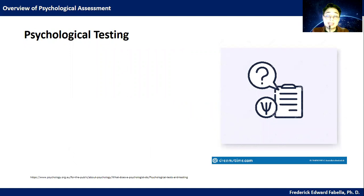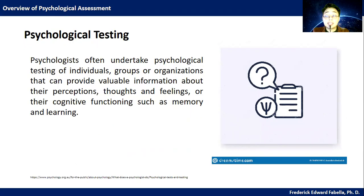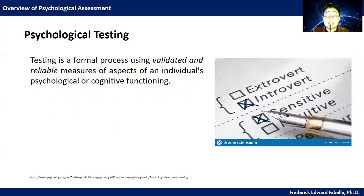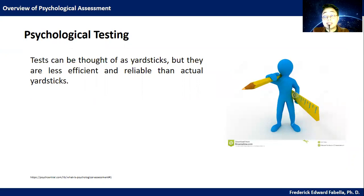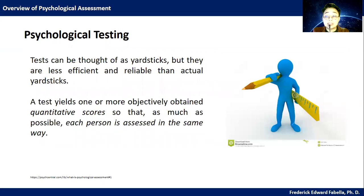Let's now proceed to psychological testing. Psychologists often undertake psychological testing of individuals, groups, or organizations to provide valuable information about their perceptions, thoughts, and feelings, or their cognitive functioning such as memory and learning. Testing is a formal process using validated and reliable measures of aspects of an individual's psychological or cognitive functioning. It might include paper-and-pencil tests like questionnaires and surveys, or the completion of puzzle-like activities that evaluate certain skills such as planning, memory, or problem solving. Tests can be thought of as yardsticks, but they are less efficient and reliable than actual yardsticks. A test yields one or more objectively obtained quantitative scores so that each person is assessed in the same way.